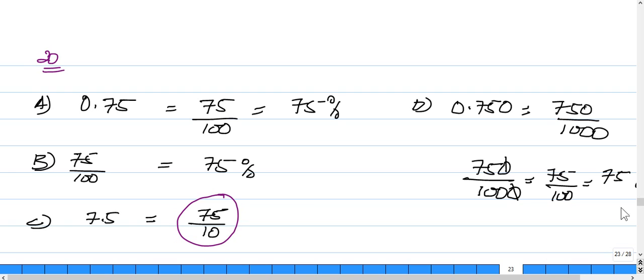And the options we were given were A, 0.75, B, 75 over 100, C, 7.5, and D, 0.750.